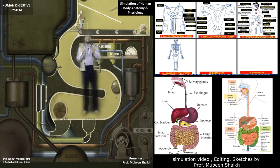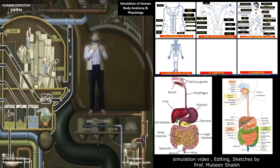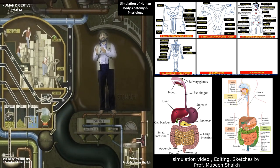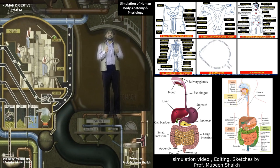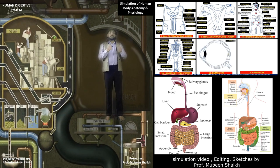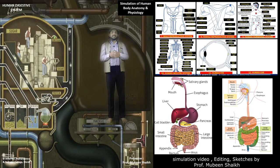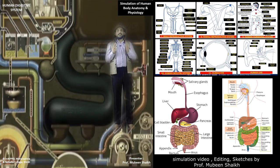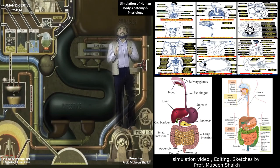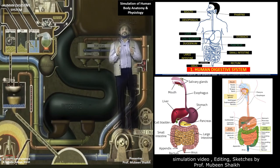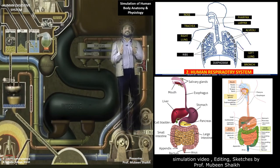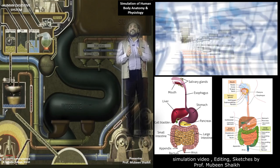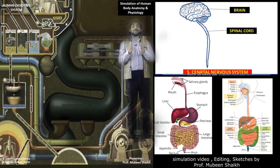The enzymes in the intestine convert proteins into amino acids, carbohydrates into monosaccharides, and lipids into fatty acids. Undigested food material gets expelled out of the body via the large intestine and anus.